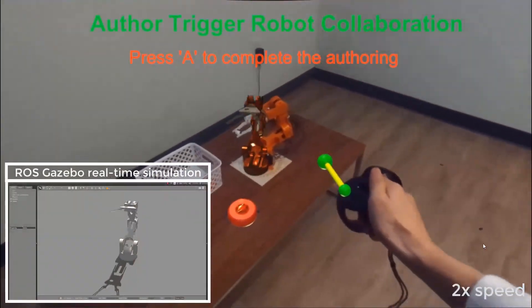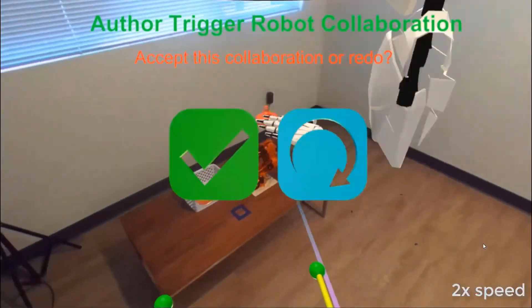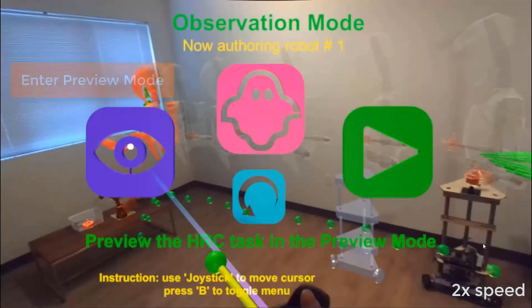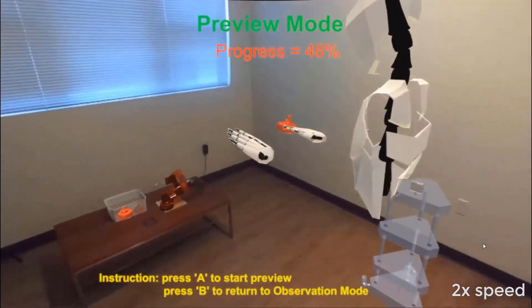To enable robot interaction with realistic motion performance, we adopt Gazebo as back-end robot simulator. Now, user can enter the preview mode and visualize the authored task with ghost simulation.